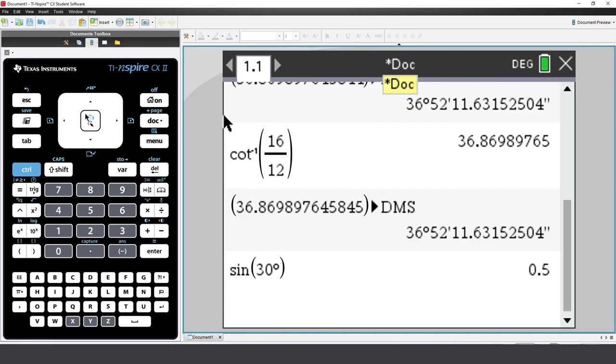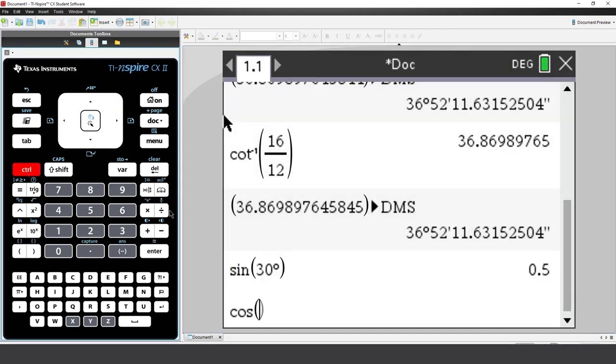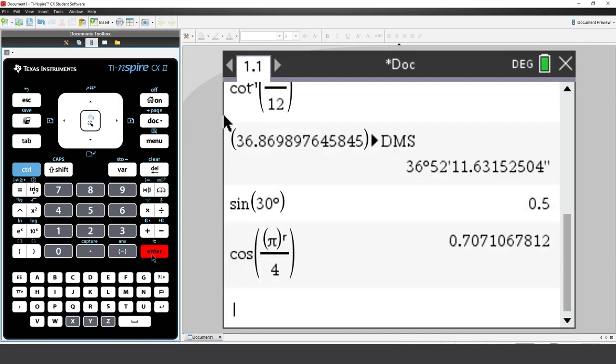Of course you can do the same in reverse. If your current application is set to degrees, you can use the radians symbol. Remember, always check what the current mode is for your current application.